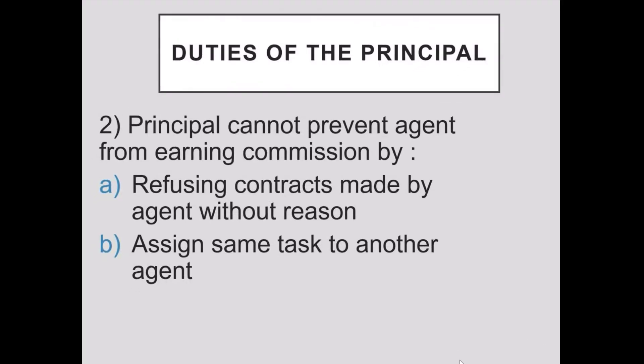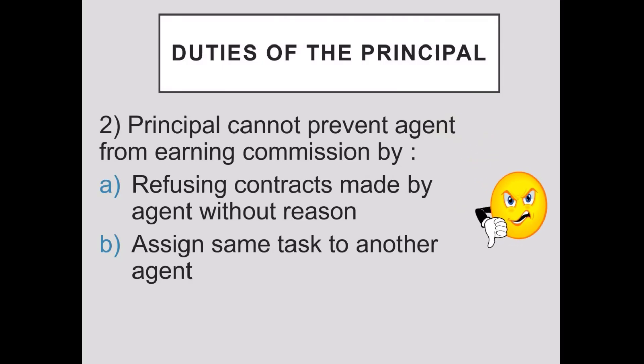The second duty of the principal is that the principal cannot prevent the agent from earning his commission. The principal cannot do things to stop the agent or create hurdles so that the agent cannot get his commission. For example, if the principal refused every contract the agent made on behalf of the principal without any valid reason, this is a form of preventing the agent from earning his commission.